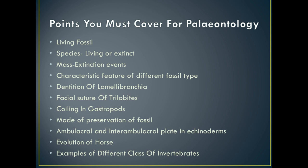Next is the Mode of Preservation of Fossil. Although questions are not generally asked from this section, you may still expect a question this year. Next is Ambulacral and Interambulacral plates in Echinoderms. Whenever you are studying Lamellibranchia, Trilobita, Gastropoda or Echinodermata, there is a basic body plan — try to remember that diagram for each organism. Next is the Evolution of Horse, which is part of Vertebrate Paleontology, including evolution of man, horse and elephants; horse is most important. Next is examples of different classes of invertebrates, because match-the-column or odd-one-out questions may come from that.